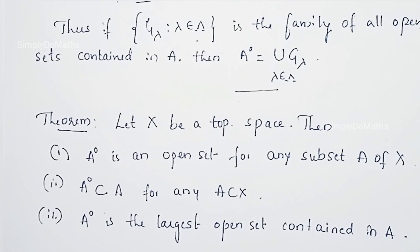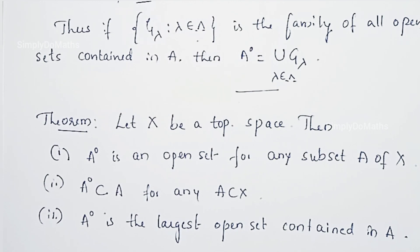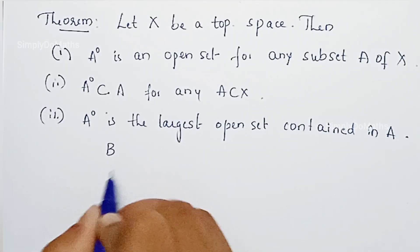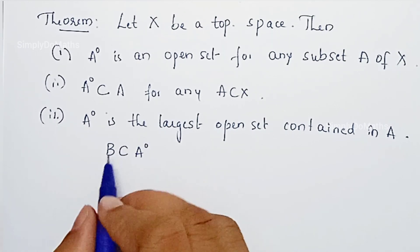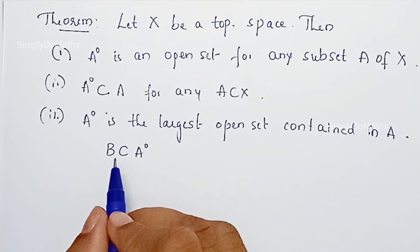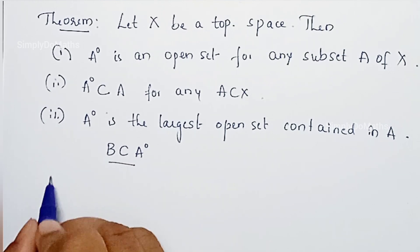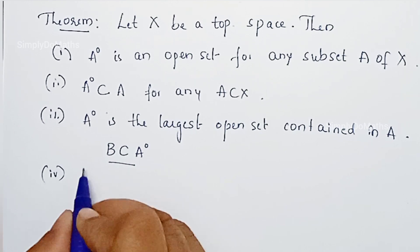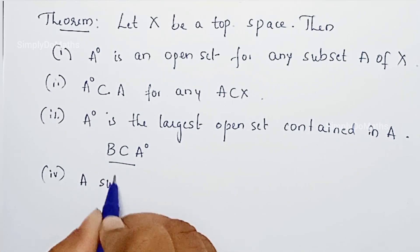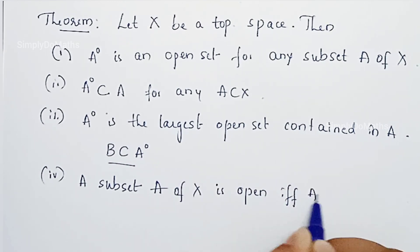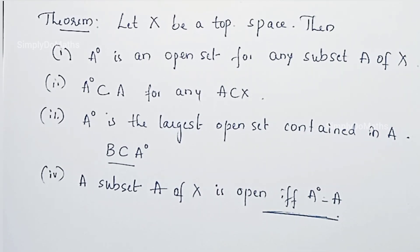In a previous video on closure, we studied that the closure of A is the smallest closed set containing A. Here, the interior will be the largest open set contained in A. So in closure it contains A, while in interior it is contained in A. Also, a fourth property: a subset A of X is an open set if and only if Aº equals A.